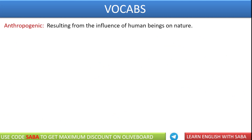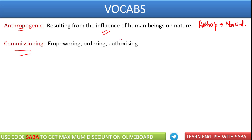Next word we have is anthropogenic. इसमें anthrop word आपका root है, जो कि SSC में काफी पूछा जाता है. Anthrop word का मतलब होता है mankind. जैसे आपने word सुना होगा philanthropist — lover of mankind; anthropology — study of mankind. उसी तरह anthropogenic word का मतलब होता है resulting from the influence of human beings on nature — मतलब जो human beings के actions की वजह से nature affected हो रहा है, that is called anthropogenic. Anthropogenic is an adjective. Next one is commissioning — basically we say authorizing, ordering someone, empowering — मतलब किसी को authority देना कुछ काम करने के लिए.